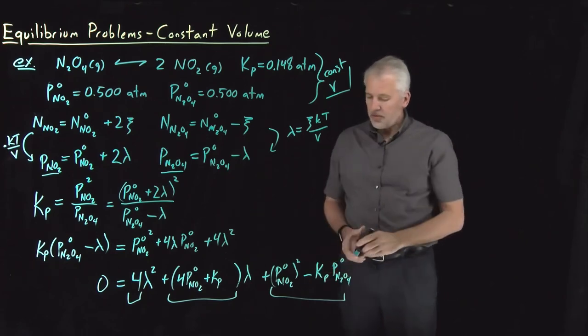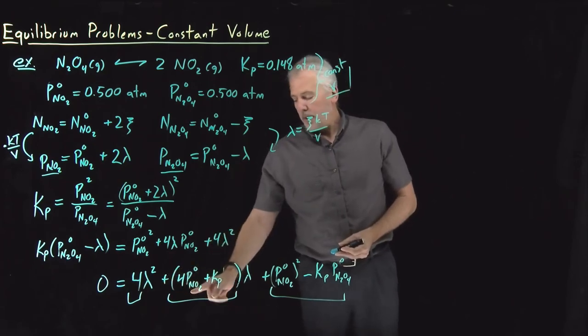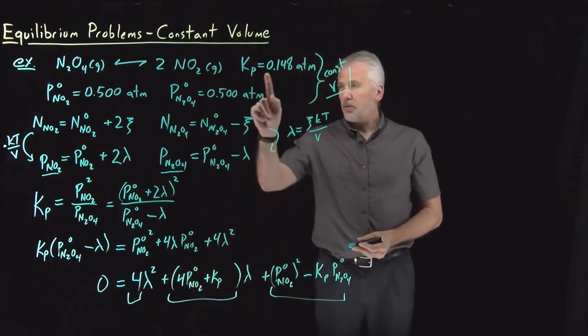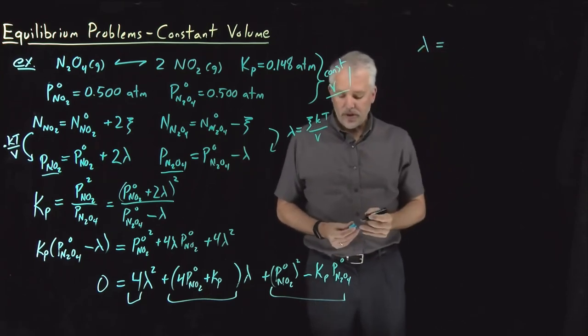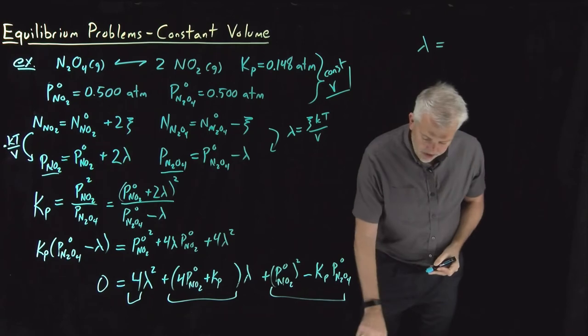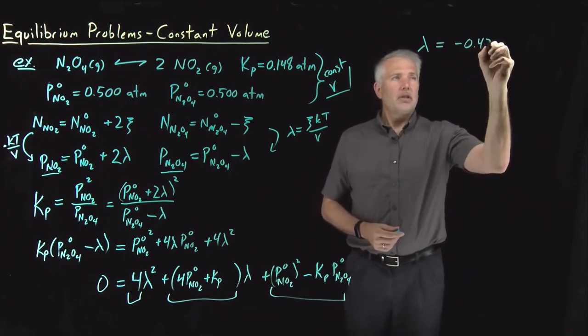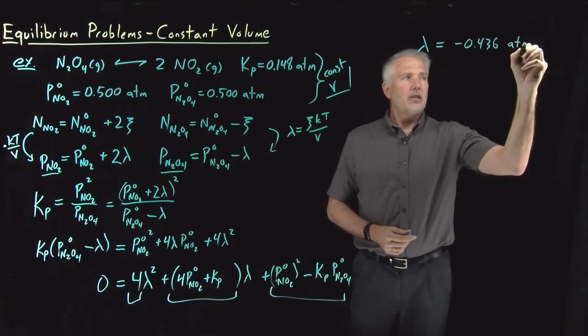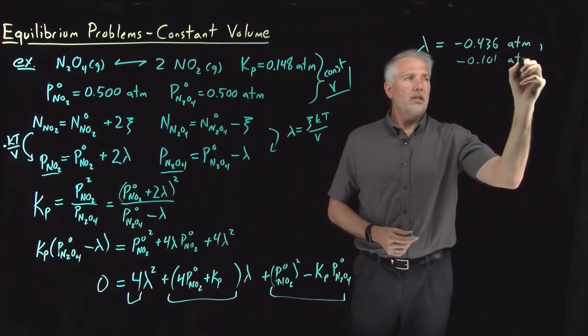So I've just rearranged this equation to make it look like a quadratic equation with an A coefficient, a B coefficient, and a C coefficient. We won't work through solving the quadratic equation again. But if we plug those terms into the quadratic equation, we know the values again for P0 NO2, for Kp. Those are the values we were given in the problem. If we solve the quadratic equation now, what we obtain is, of course, two solutions. Lambda, the variable we're solving for, is either equal to negative 0.436 units of atmospheres or negative 0.101 atmospheres.